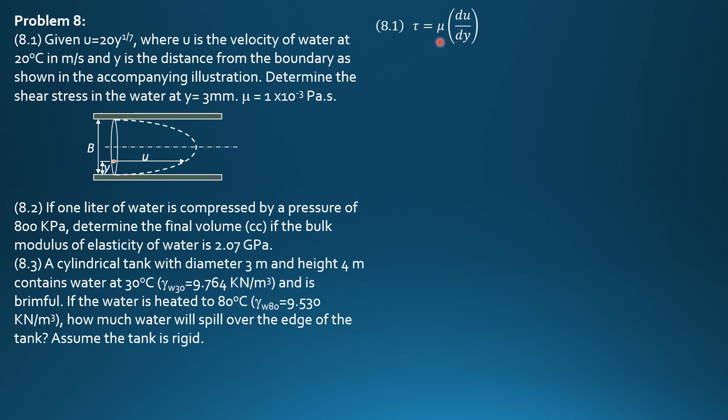Substitute mu is 1 times 10 to the negative 3 newton second per meter square, or Pascal second. The derivative of u with respect to y is 20 over 7, y to the negative 6 over 7.